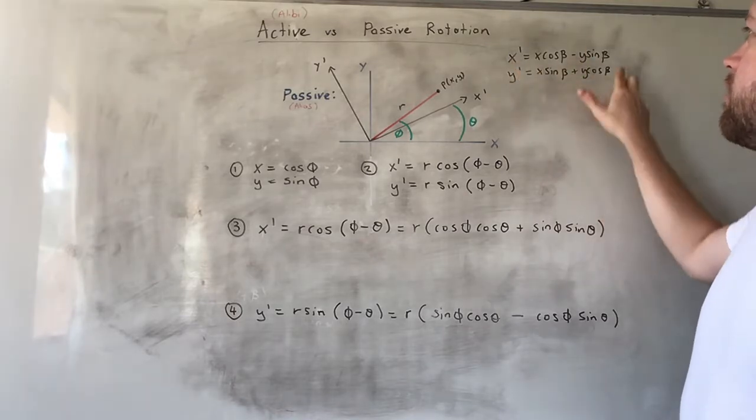So what we're going to do is we're going to derive the same expression as we had in the last video, but instead of an active transformation, we're going to do a passive transformation. So I've put our previous result up here just for reference sake. The last time when we were discussing an active transformation, this is the result we got. The new coordinate x and y is given by some combination of the original x and y coordinate.